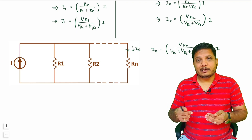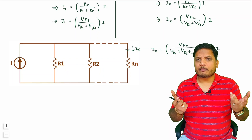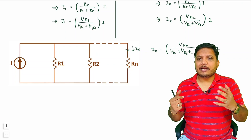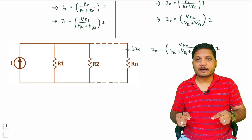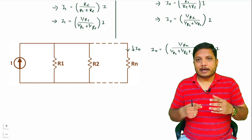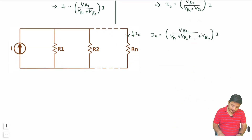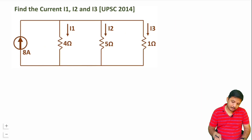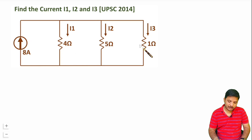I explain this because many students use very complex formulas and end up getting trapped while solving questions. Let me now give you a very interesting question from UPSC 2014. We have a current source of 8 amperes, and we need to find I1, I2, and I3 passing through 4 ohm, 5 ohm, and 1 ohm resistors respectively.